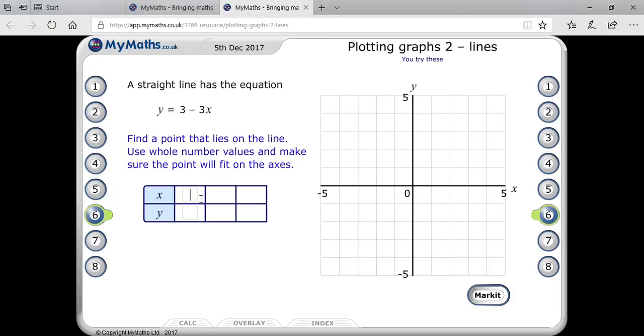Suppose that x equals 0, so you will get y equals 3. The first point will be here, yes that's right. So 0 comma 3, you have to mention that over there.